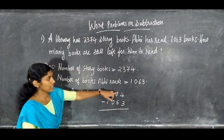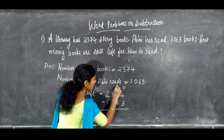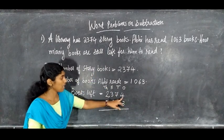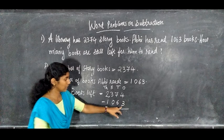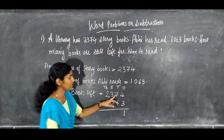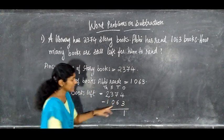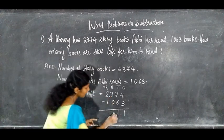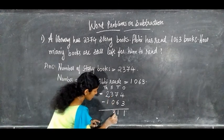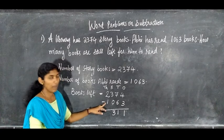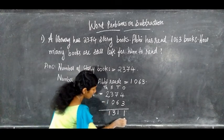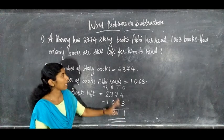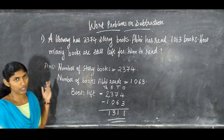First subtract the ones, tens, hundreds and thousands. Subtract the ones: 4 minus 3 equals 1. Then 7 minus 6, again 1. Then 3 minus 0, 3 itself. Then 2 minus 1, equals 1. Therefore 1311 books are left for AB to read.